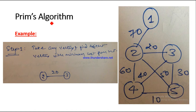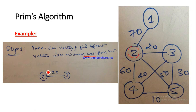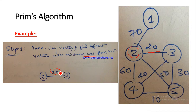Let's see how to solve a problem using Prim's algorithm. Suppose we have a given graph and we have to make a minimum spanning tree from it. Step 1: take any vertex and find the edge with minimum cost from it. We have taken vertex number 2. From vertex 2, the adjacent edges are 2-to-1, 2-to-4, 2-to-3, and 2-to-5. We take only the minimum cost edge, which is 2-to-3, and draw it in our MST.